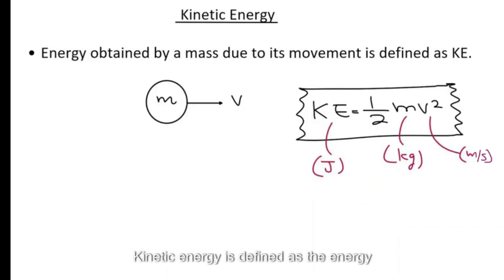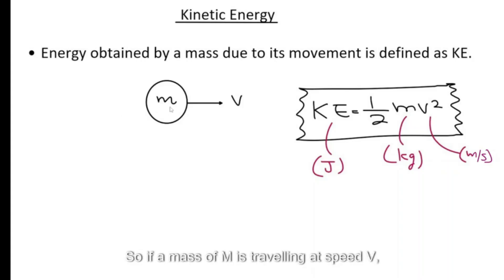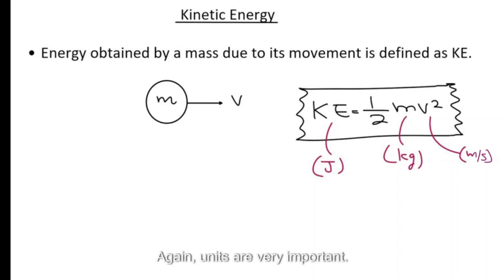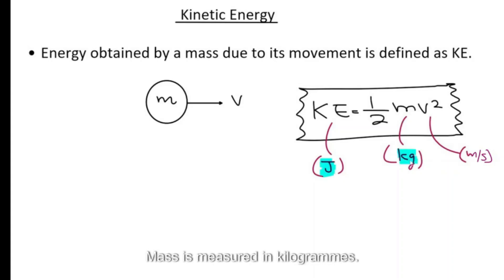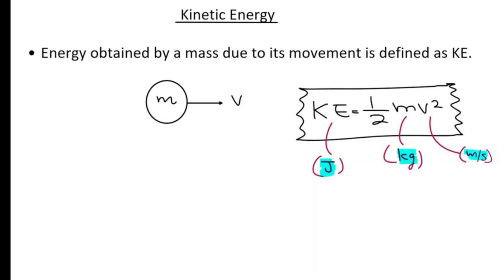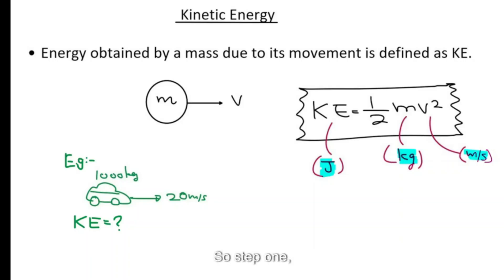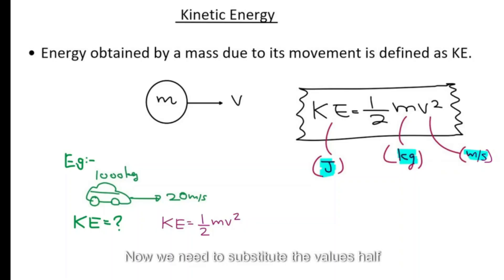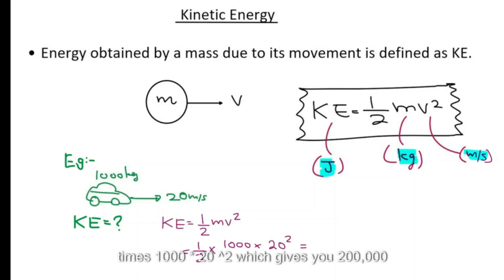Kinetic energy is the energy obtained by a mass due to its movement. If a mass m is traveling at speed v, the kinetic energy is given by KE = ½mv². Energy is in joules, mass is in kilograms, and speed is in meters per second. For example: KE = ½ × 1000 × 20² = 200,000 joules.